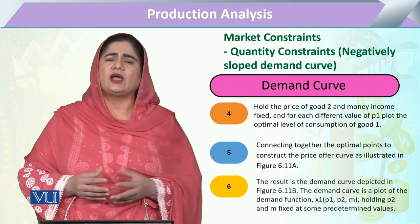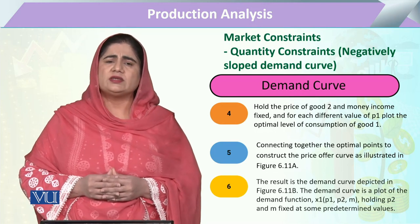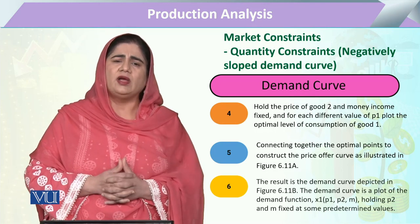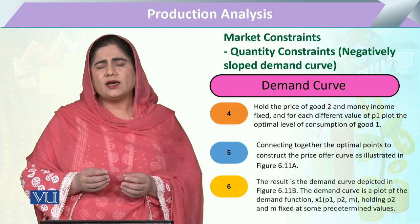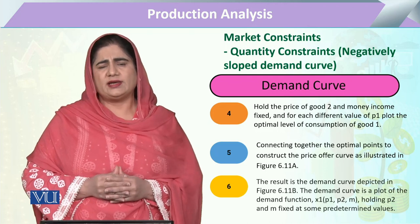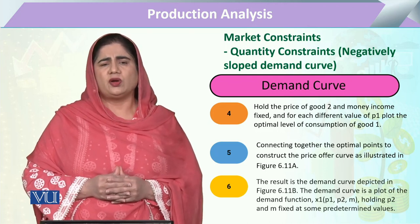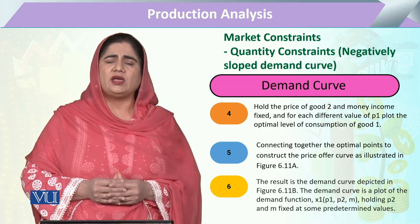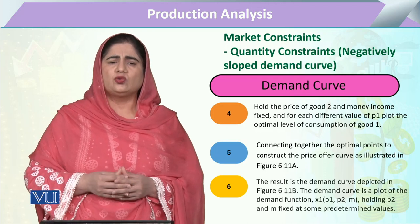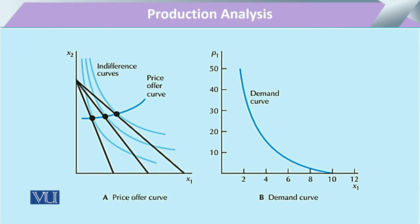We can calculate the demand curve. When we call this demand curve by another name — the price offer curve — it shows all the quantities of a commodity that are demanded by the consumer, or that are being offered to the consumer, at various price levels.